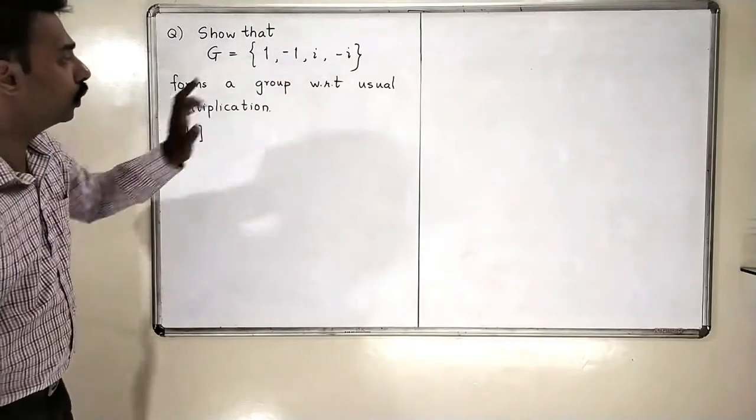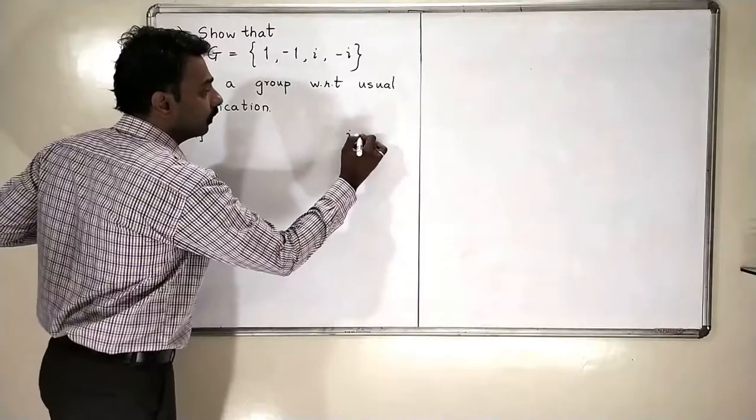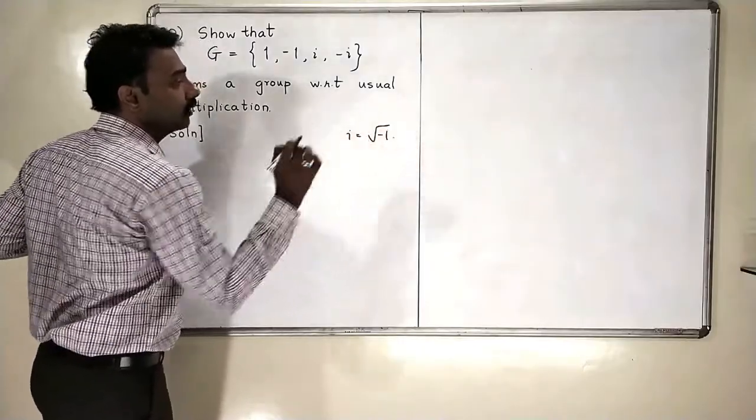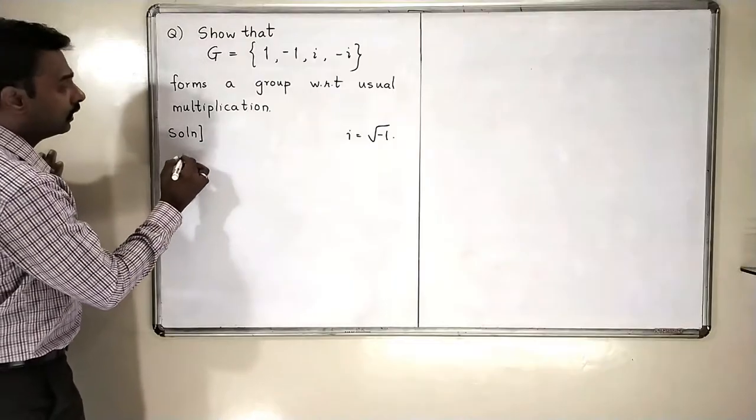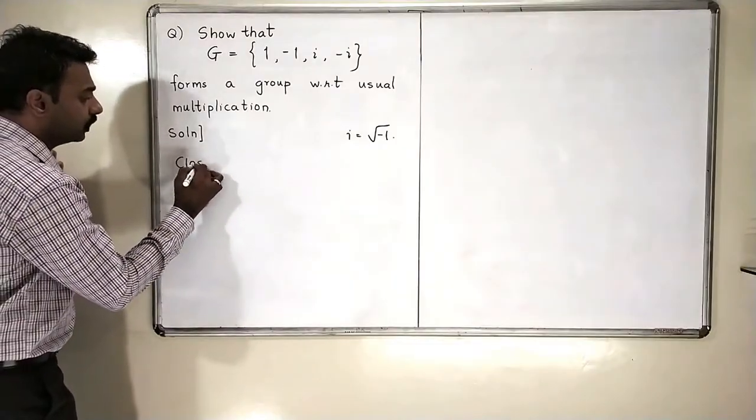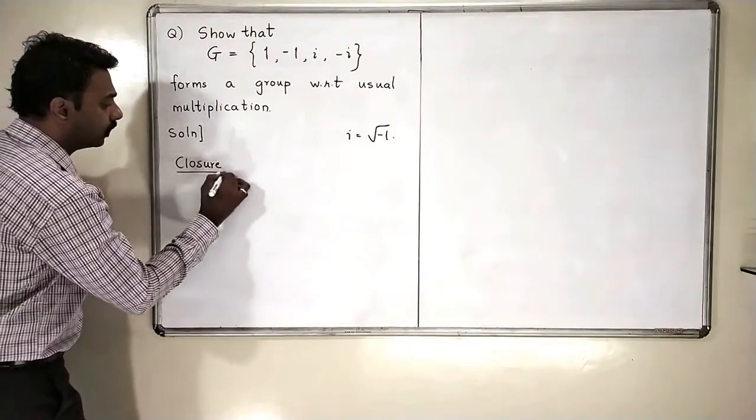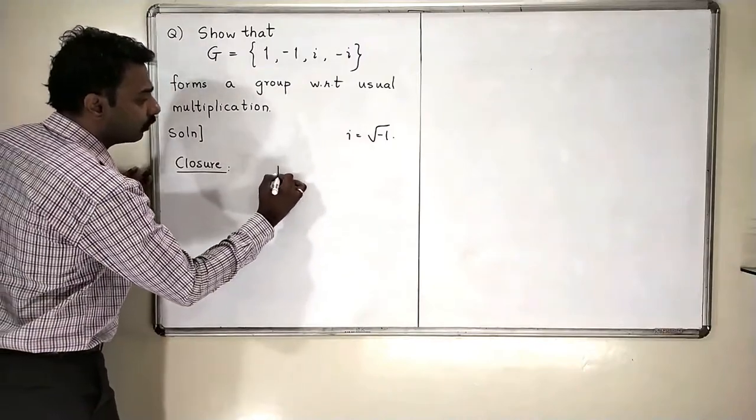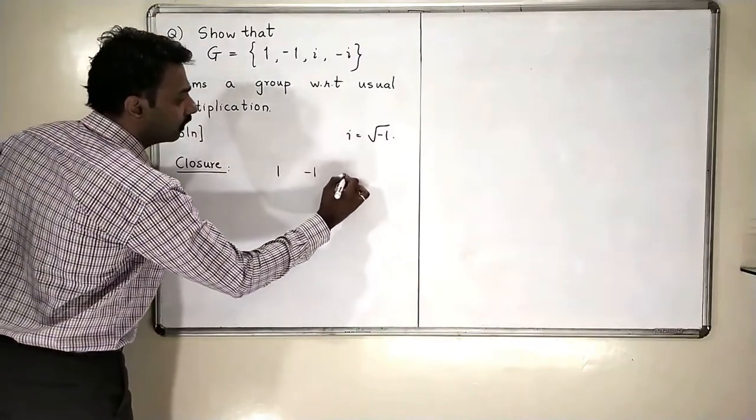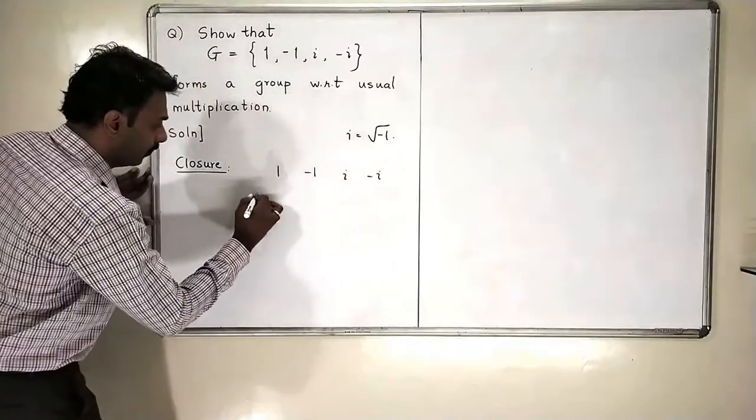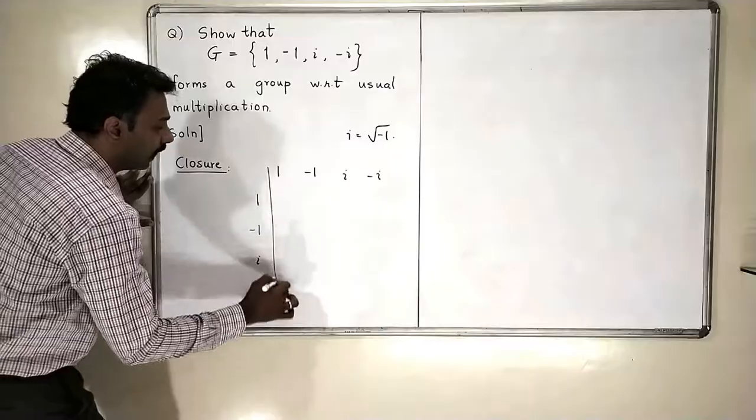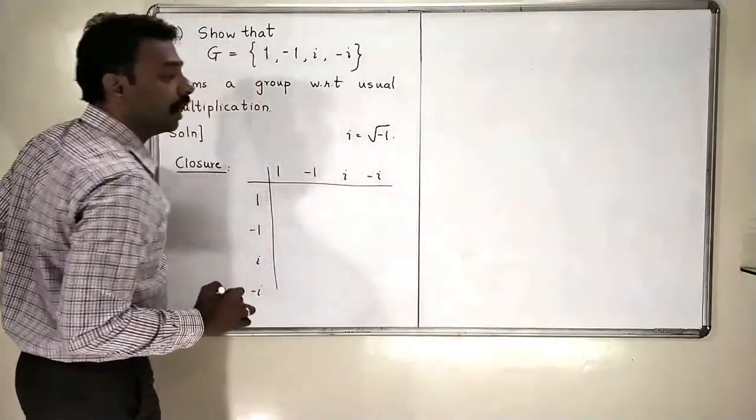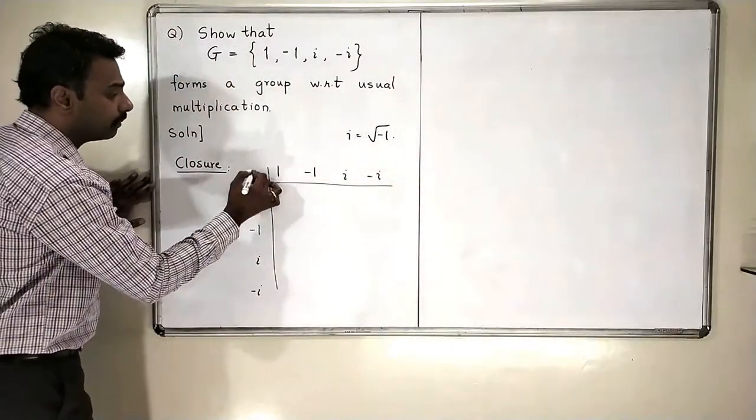I hope you know that i is nothing but our standard square root of minus 1. Now if I look at this set and if I try to look at the closure, as usual, I will do the same thing. I will write the four elements and prepare a table of this and show that all the entries in the table are, again, either 1, minus 1, i, or minus i. I am going to multiply them.